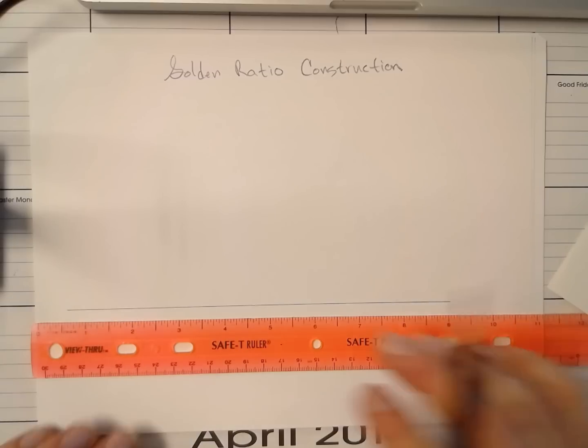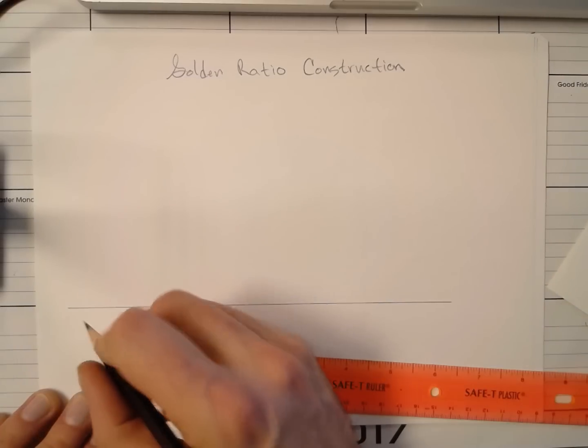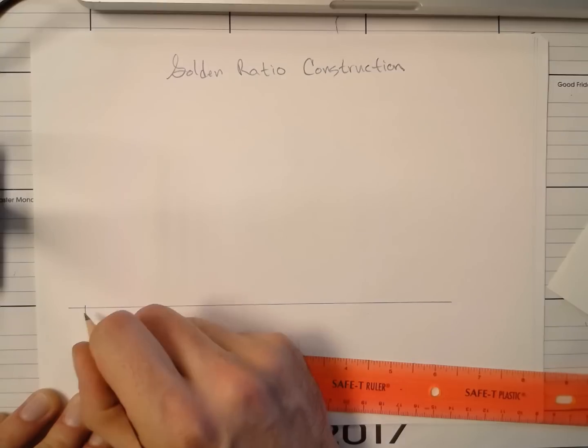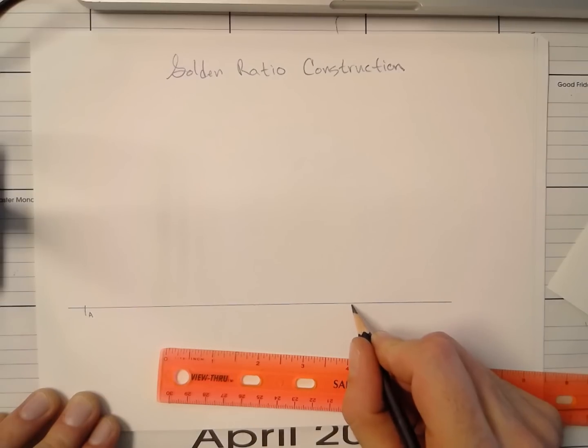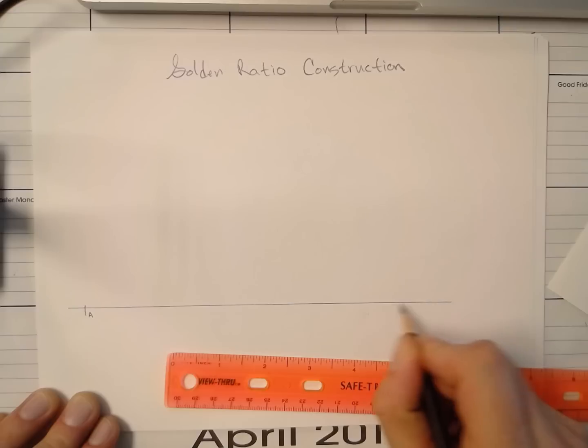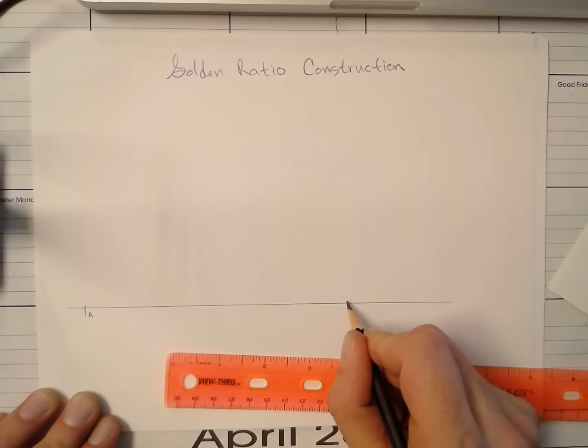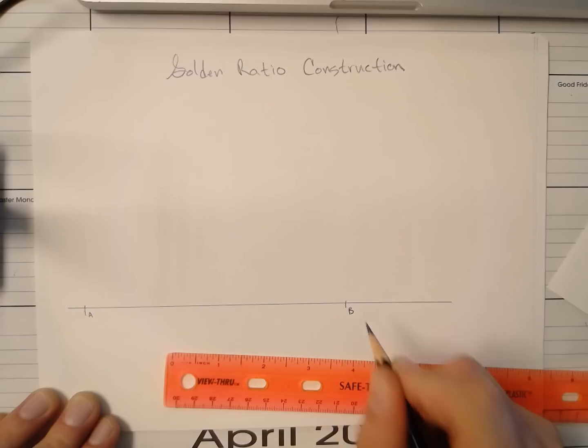Start by using your straight edge to just draw a line. Okay, label one end of your line A, and somewhere else, not so close to the end, you're going to need a little bit of this segment here as part of your construction, maybe right about there. Good enough. We'll label that point B.